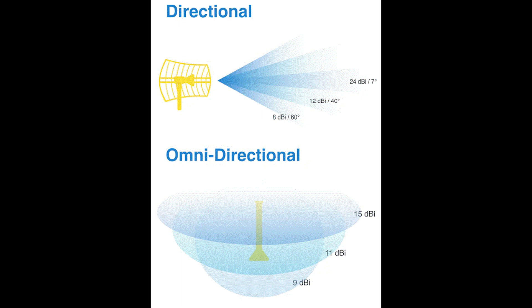Omnidirectional antennas are great in environments that have a clear line of sight between the senders and receivers. The power is evenly spread to all points, making omnidirectional antennas well suited for home and small office applications.